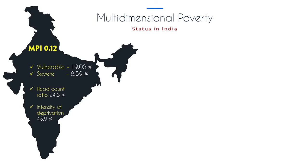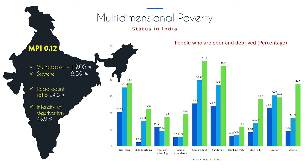Coming to the results: the overall MPI of India is 0.12. Around 19.5 percent of the population are still vulnerable to poverty, and 8.59 percent are in severe poverty. The intensity of deprivation is approximately 43.9 percent and the headcount ratio is around 24.5 percent. Based on three years of secondary data — 2005, 2011, and 2015 — there is a gradual decline in the number of people deprived across each indicator.